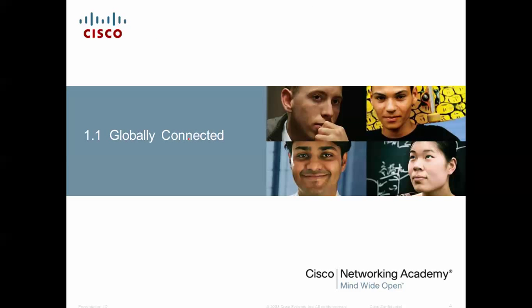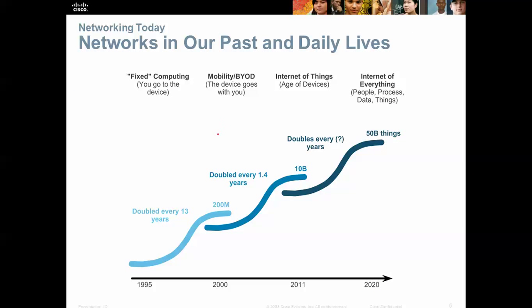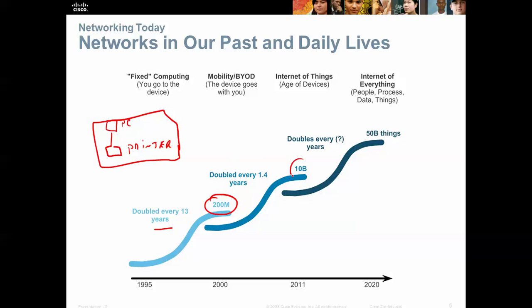So, globally connected — what does that mean? It simply means that we are connected to others. Devices around the globe are connected to each other. We no longer have just a simple setup with a PC and a printer in an office like we did in the late 80s and early 90s. With the invention of email, connections in our lives have been doubling every 13 years — 200 million as of 2000, 10 billion as of 2011, and Cisco is estimating 50 billion things connected by 2020.